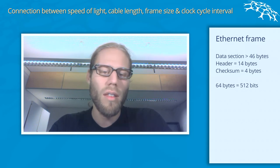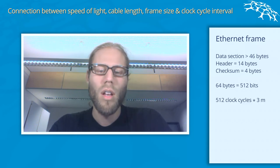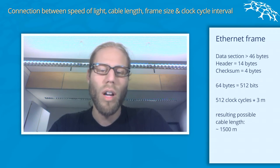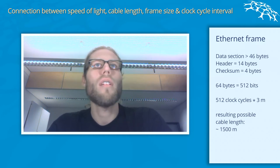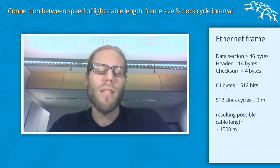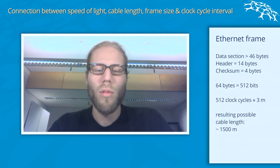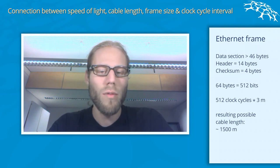You can multiply 512 clock cycles by three meters per clock cycle, and you realize you can achieve a distance of something like 1.5 kilometers. In real Ethernet, the supported distance will be a little bit shorter to make sure everything really works fine.